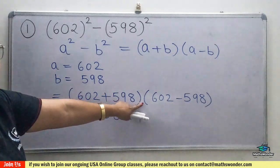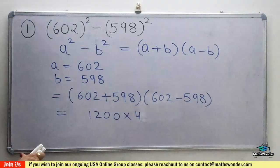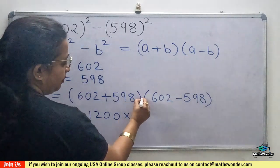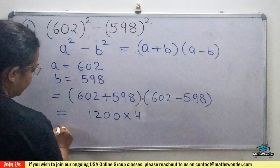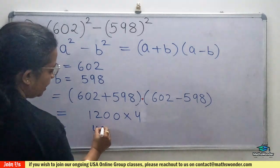Then as you know, there is no sign, that means it will consider multiplication. So 1200 times 4 is 4800.